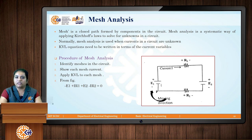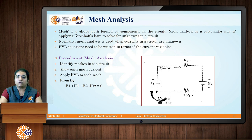According to the KVL and the chosen moving and current directions, the equation for a mesh becomes: −E1 + I1·R1 + E2 − I·R2 = 0. If there are two meshes, two equations are formed and solved as simultaneous equations using mesh analysis.